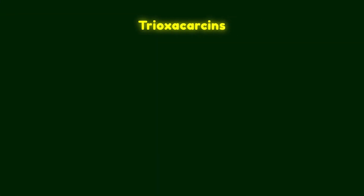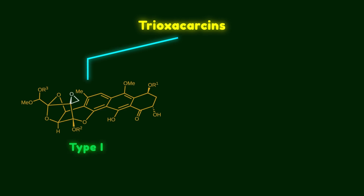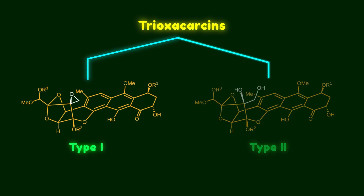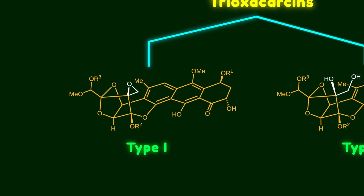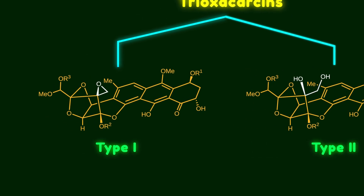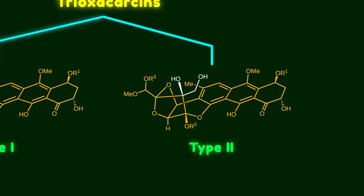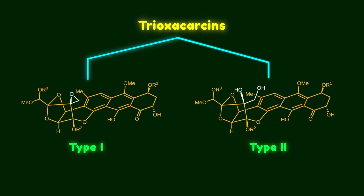Tyroxycarcins are divided into type 1 and type 2. In type 1, there is a spiroepoxide ring, but type 2 contains a diol group. Type 1 shows high antitumor activity, unlike type 2. So the presence of the epoxide ring is important for biological activity.